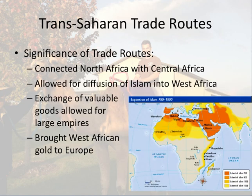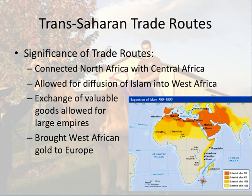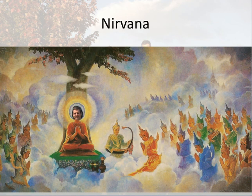The significance of these trade routes: the Trans-Saharan connected North Africa with Central Africa, which eventually connected Central Africa with Europe. It also allowed for the diffusion of Islam — those Sub-Saharan empires adopted Islam largely because of these trade routes. The exchange of valuable goods allowed empires to grow, as we see in those West African empires. It also brought West African gold to Europe, which will eventually help bring them out of the Dark Ages and allow for the Renaissance. Those are post-classical trade routes, and that is how we reach Nirvana. This is your Buddha, signing off.